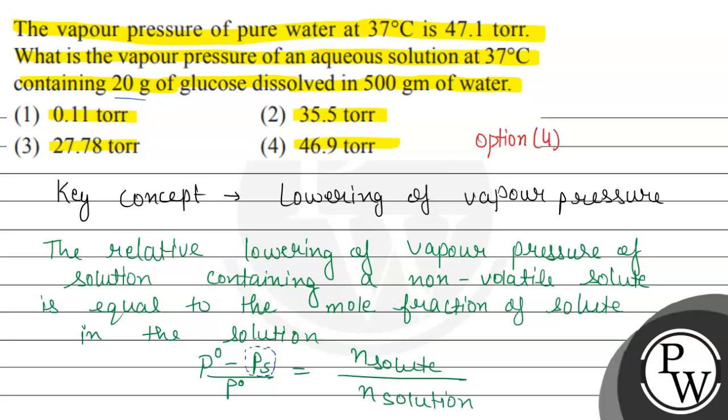And we can see option 4, 46.9 torr is the correct match. Options 1, 2, and 3 are incorrect. Hope you understood it well, best of luck.